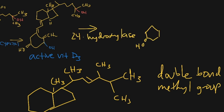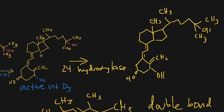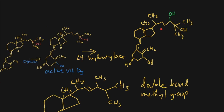The main way you inactivate vitamin D3 is by adding a hydroxyl group at the 24 position. When you see a hydroxyl group at the 24 position, you can tell that it's inactivated — which we'll see with the other analogs. Remember: seeing a 24-hydroxy means the molecule is inactive.